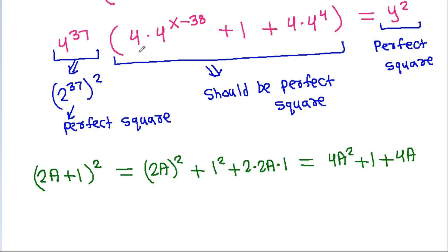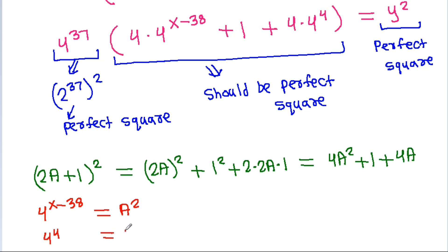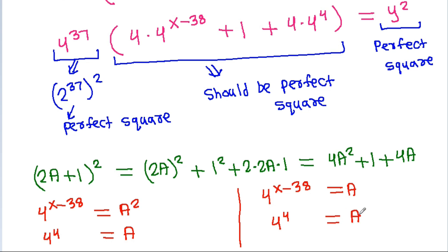So if we compare 4 times 4 power x minus 38 plus 1 plus 4 times 4 power 4 with 4a squared plus 1 plus 4a, then either 4 power x minus 38 can be equal to a squared and 4 power 4 can be equal to a squared, or 4 power x minus 38 can be equal to a and 4 power 4 can be equal to a squared.